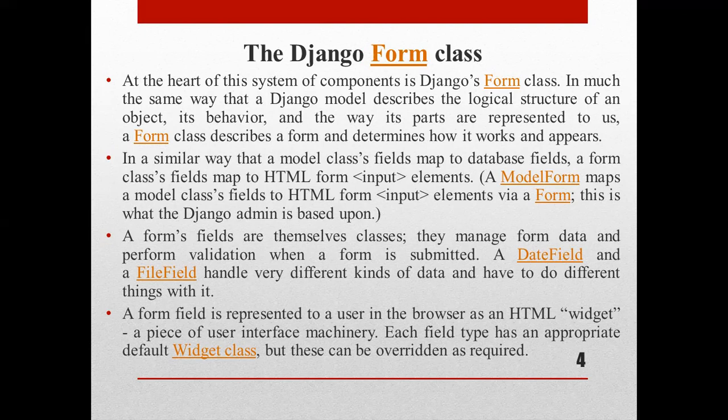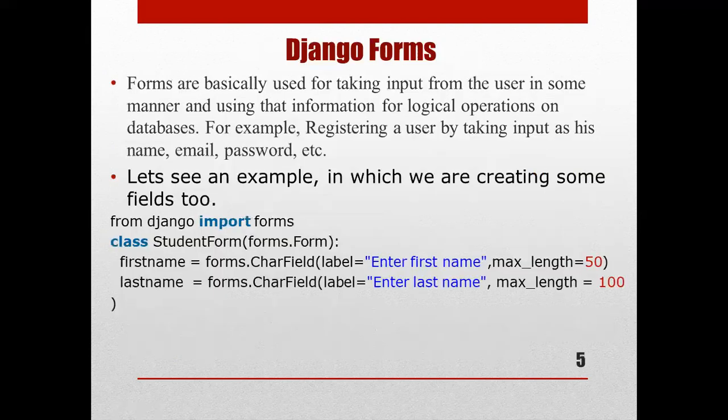The form fields are themselves classes that manage form data and perform validation when a form is submitted. A date field and a file field handle very different kinds of data. A form field is represented to a user in the browser as an HTML widget, which is a piece of user interface machinery. Forms are basically used for taking inputs from the user and using that information for logical operations on the database.